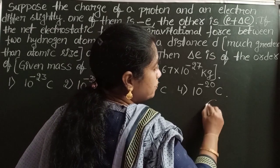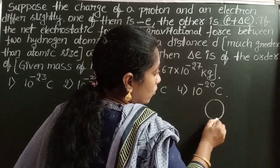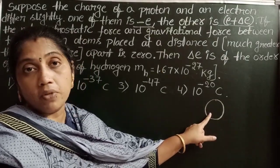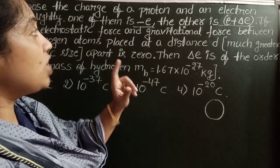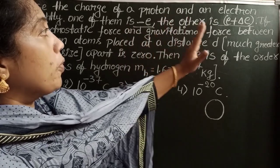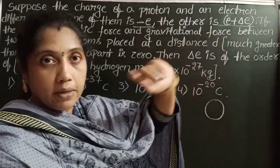In a hydrogen atom, a single hydrogen atom consists of one electron and one proton. Here, charge of electron and proton is slightly different.